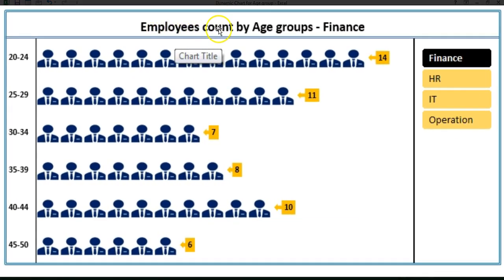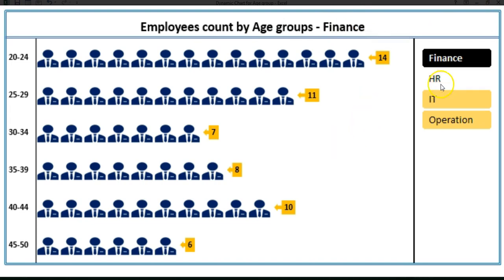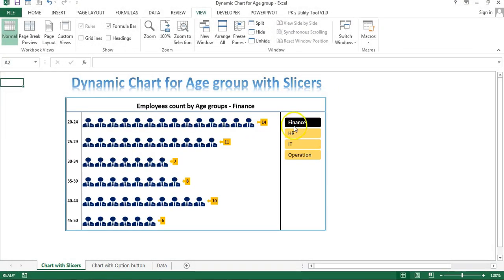This chart shows employee count by age group. You can see the age groups: 20 to 24 years, 25 to 29 years, 30 to 34 years, and other groups, with employee counts like 14, 11, 7, 8, 10, and 6. The chart title shows this is for the Finance department. If we select another department, the chart will change automatically using the slicer.